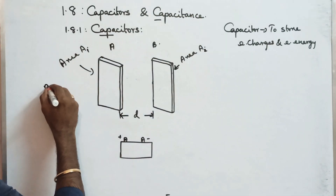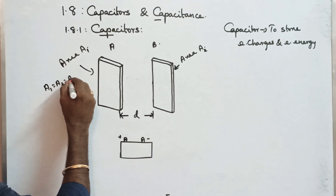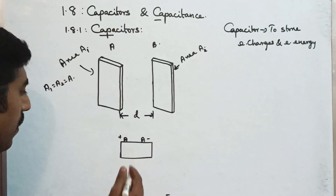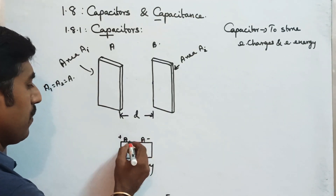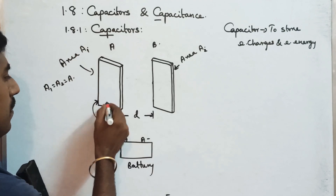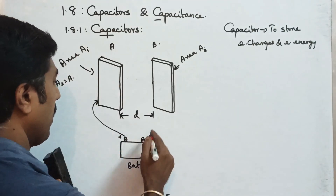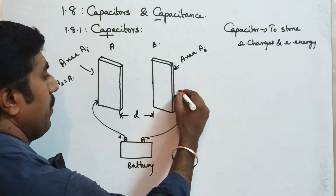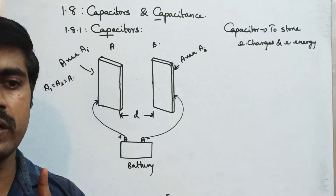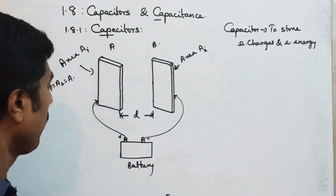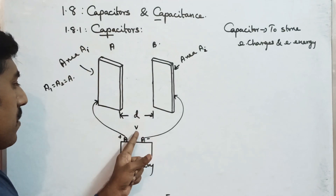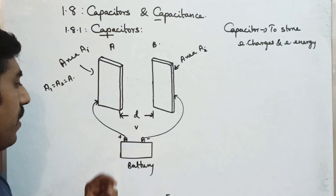The area of the first plate is equal to the area of the second plate, so we take the letter A for area. Now let us take a battery here. The battery has a positive terminal and a negative terminal. The positive terminal is connected to plate A, and the negative terminal is connected to plate B. The battery provides a potential difference V between the plates.